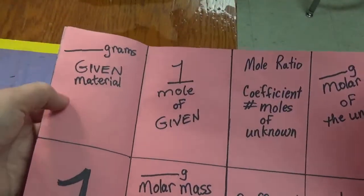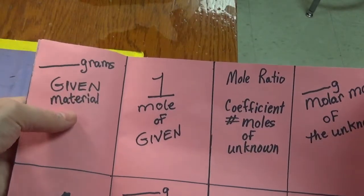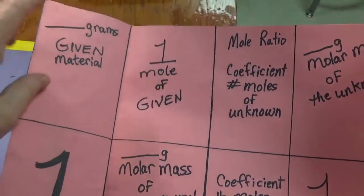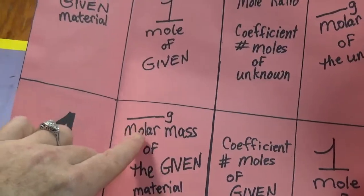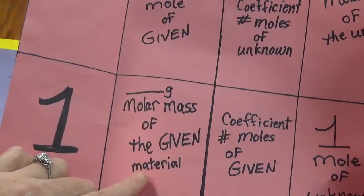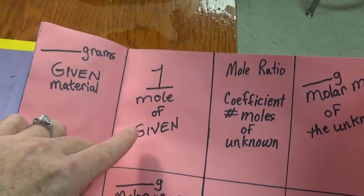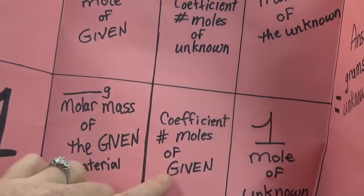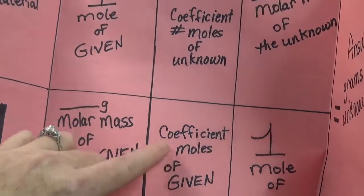When it's open, the number of grams from the question goes on top of the given material, with a 1 on the bottom. On the bottom we're going to cancel grams by copying grams, which is going to be the molar mass of the given material here, with 1 mole of given on top. Then moles of given — this is going to be the coefficient number of moles of given for the mole ratio step.